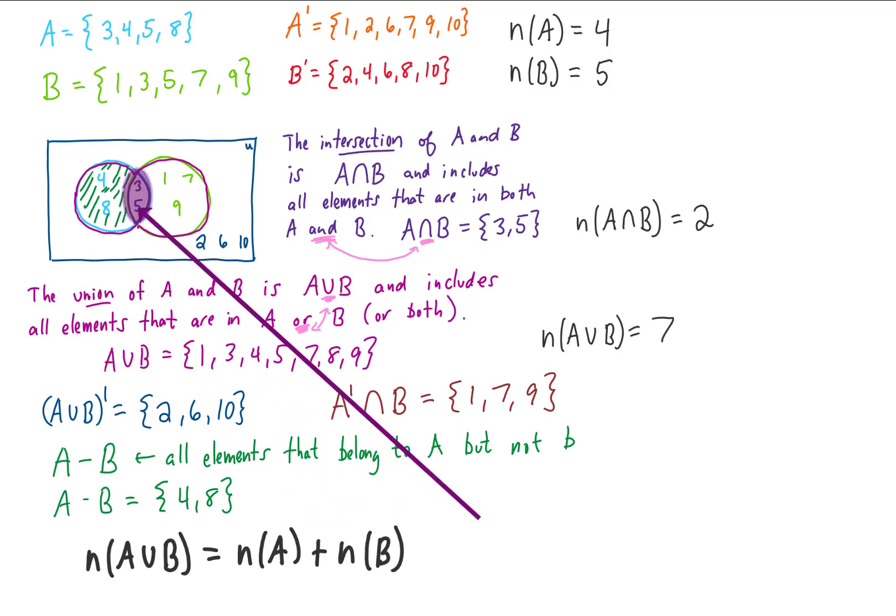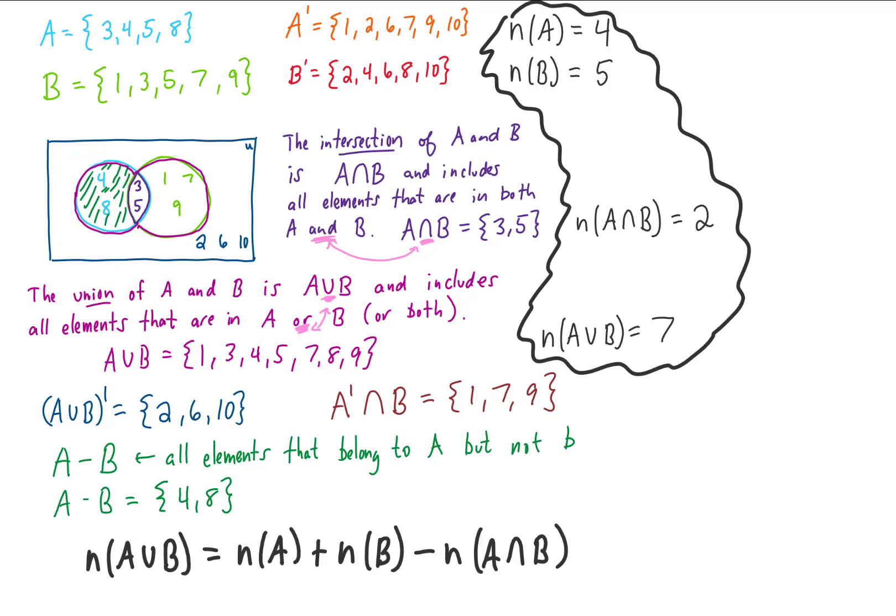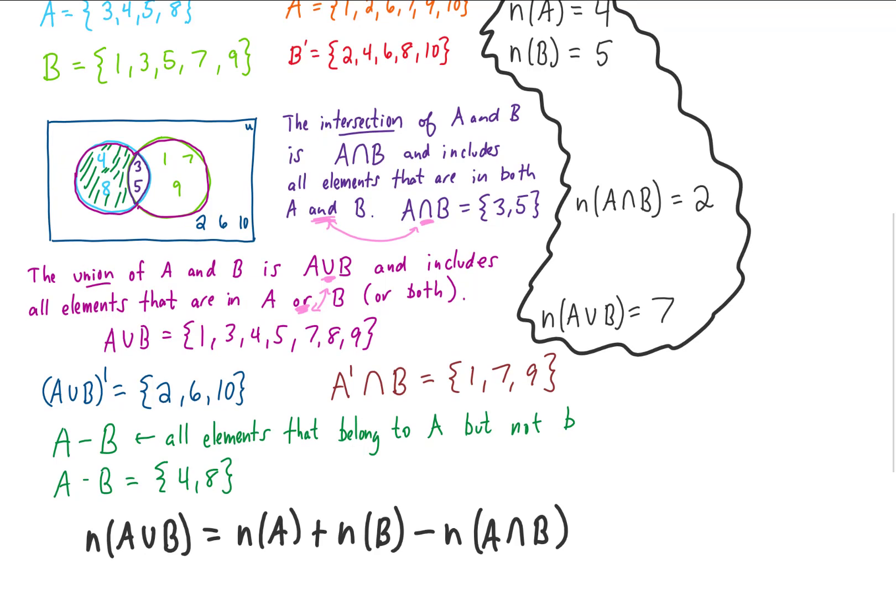But notice when we add the number of elements in A and the elements in B together, we get some overlap in the middle. We've counted these middle two elements, or these intersection elements, twice. So what we need to do to get the number of elements in this whole region A unioned with B is we need to subtract off the number of elements in the intersection of A and B. And if you look at the numbers for our particular example here, you see that we get 7 equals 4 plus 5 minus 2. And that is a true statement, so this formula checks out.